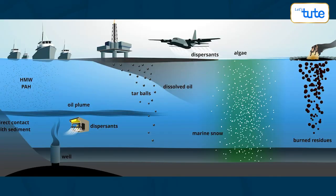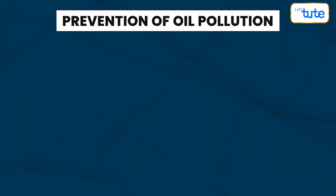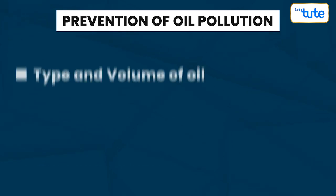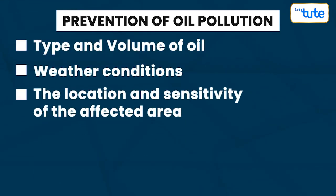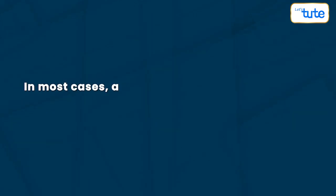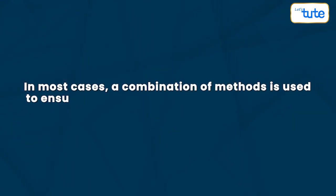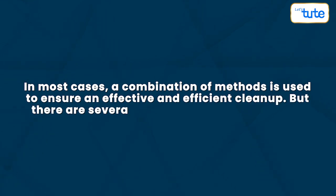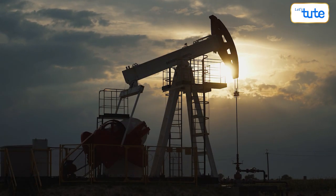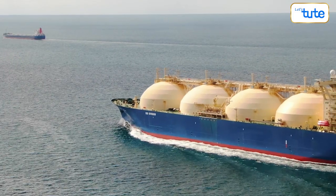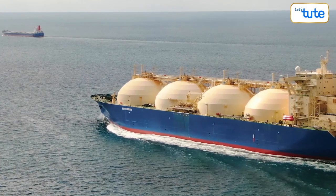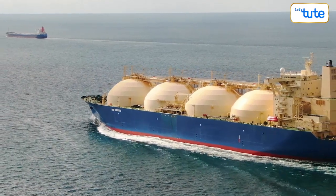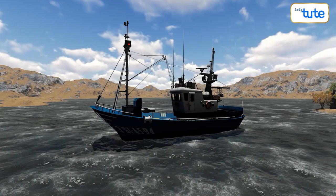Bio-remediation involves using natural microorganisms to break down the oil into harmless substances. This method is only effective in certain conditions and may take longer to complete. The specific method used depends on several factors, including the type and volume of oil, weather conditions, and the location and sensitivity of the affected area. In most cases, a combination of methods is used to ensure effective and efficient cleanup. There are also several ways to prevent oil pollution: improving safety measures during oil extraction, transportation, and storage; developing alternative energy sources that do not rely on fossil fuels; and ensuring proper disposal of oil waste.